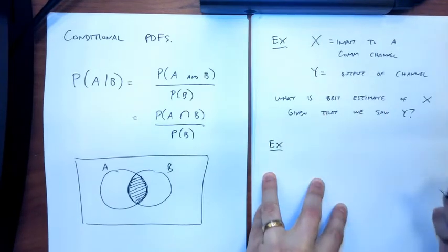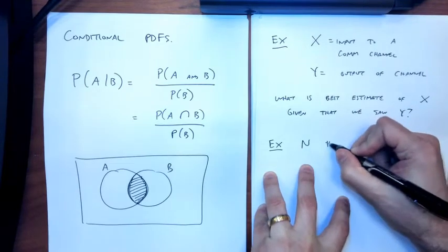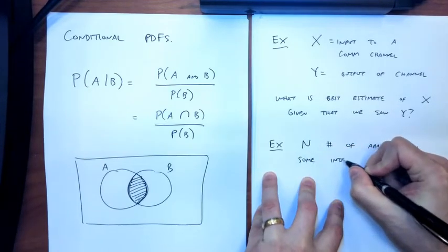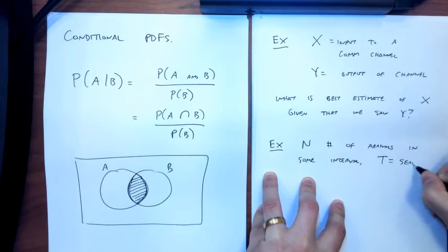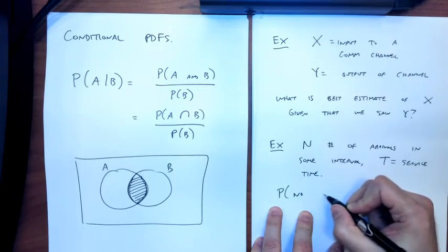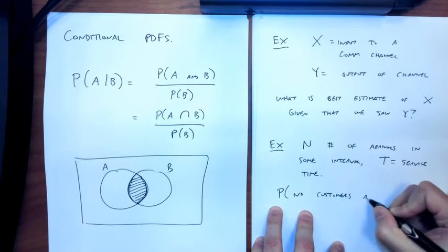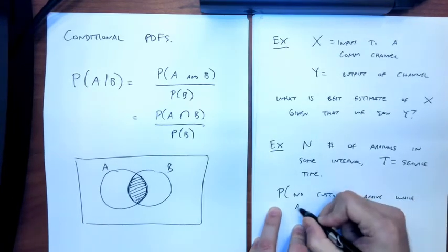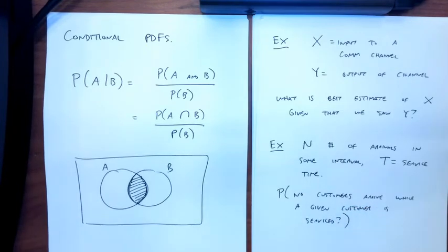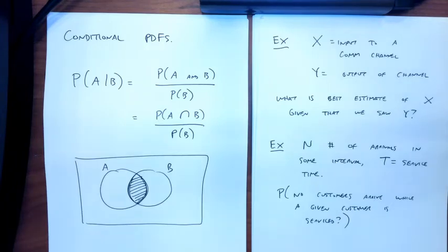Or in a more continuous sense: let N be the number of arrivals in some interval and T be the service time for every arrival. We might want to know the probability that no customers arrive while a given customer is being serviced. This has applications like: how many tellers do I need at my bank, how many TSA people do I need at a security checkpoint, or how much capacity does my router need for all the internet traffic at my school?